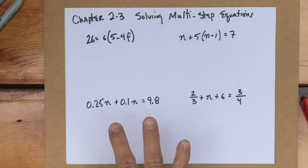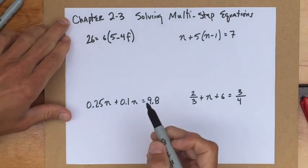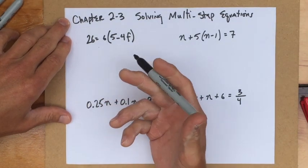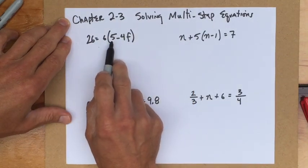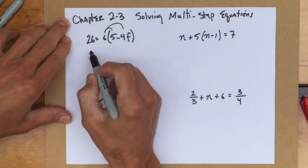Now here we go. Multi-step equations normally involve three or more steps. They can be a variety of different things. But a reminder in most cases is that we're going to multiply before we add and subtract, or we might multiply and divide before we add and subtract. In this case, I have 26 is 6 times the quantity 5 minus 4f.